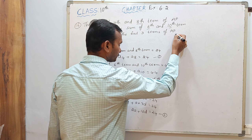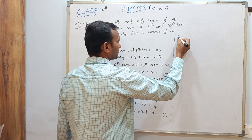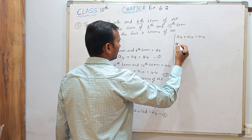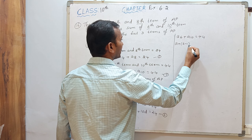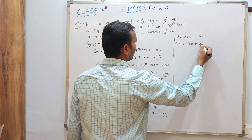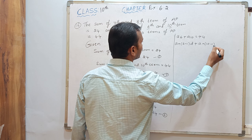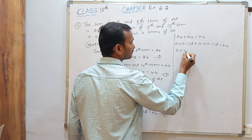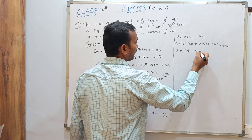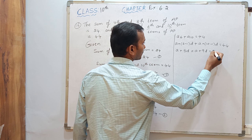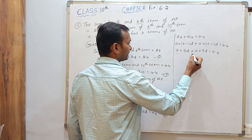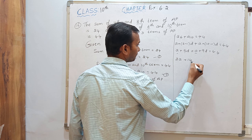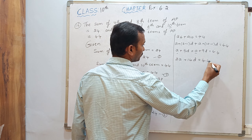Now take the second equation: A6 plus A10 equals 44. A6 means A plus (6 minus 1) into D, and A10 means A plus (10 minus 1) into D equals 44. That is A plus 5D plus A plus 9D. So A plus A is 2A, and 5D plus 9D is 14D, giving 2A plus 14D equals 44. This is equation number 4.